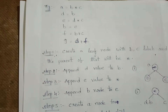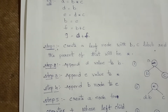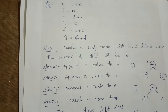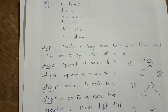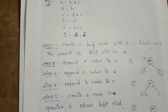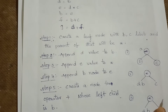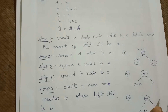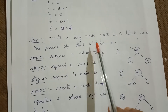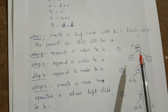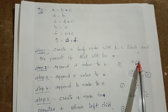Consider an example: A = B * C, D = B, E = D * C, B = E, F = B + C, and G = D + F. These are the steps for how we construct a directed acyclic graph. In step one, create a leaf node with B and C labels, and the parent of that will be the star (multiplication) operator, for the expression A = B * C.